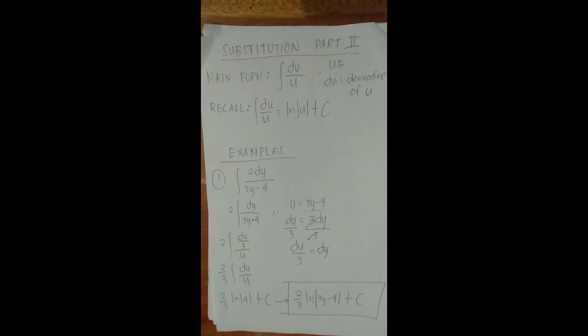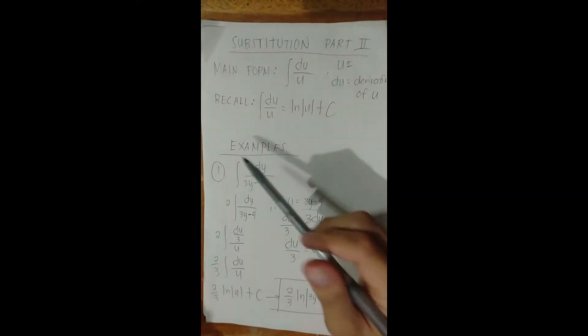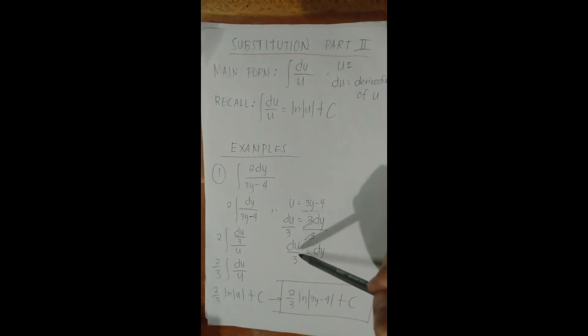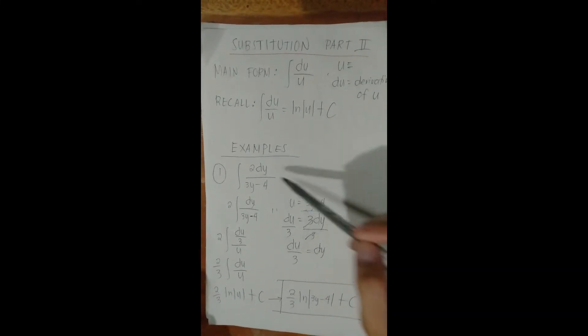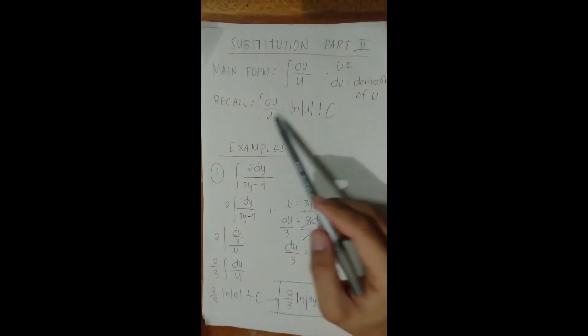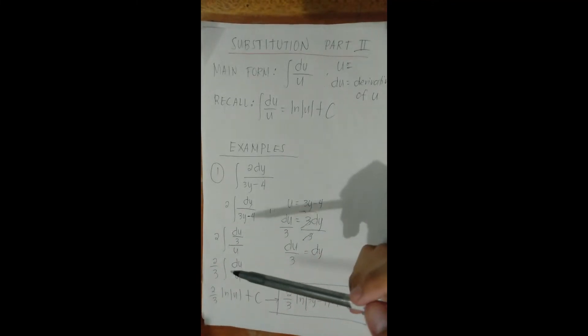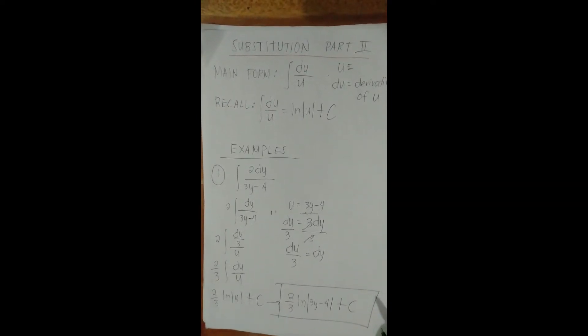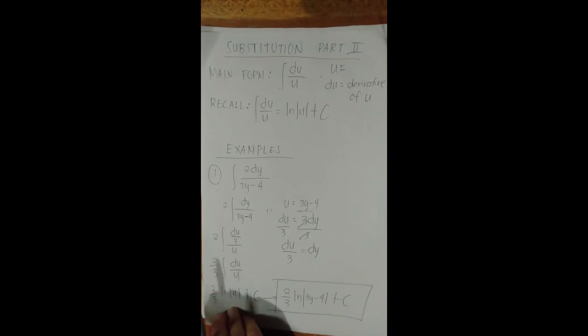Clear? Always make sure to identify the correct u, take the derivative, substitute into the original function to reach the du/u form, apply ln|u| + C, then bring back the original function. That's the process. Let's try another example — a slightly upgraded one.